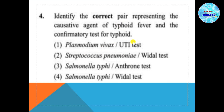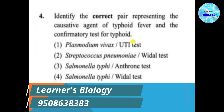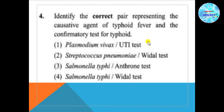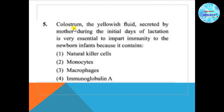The confirmatory test for typhoid is the Widal test, named after Georges-Fernand Widal, who developed this test for typhoid. So the answer is Salmonella typhi and Widal test — that is answer number 4.